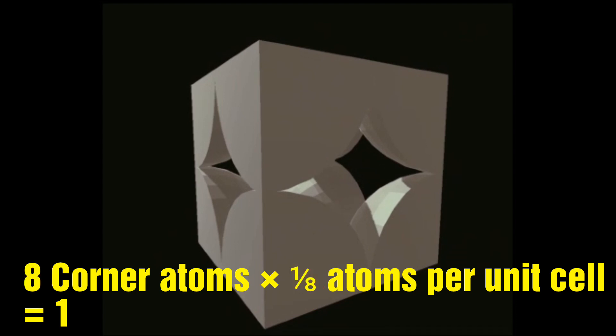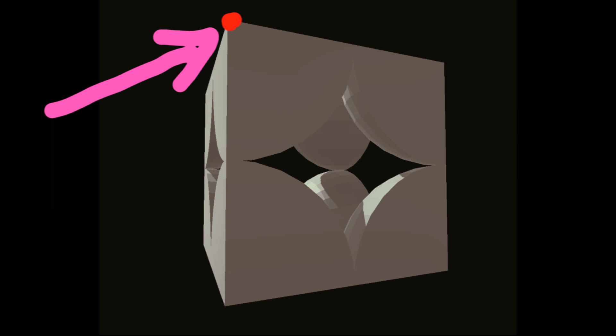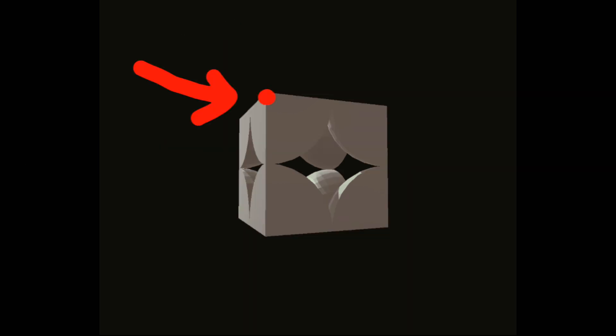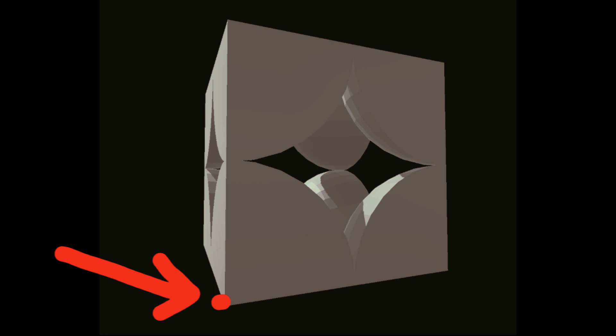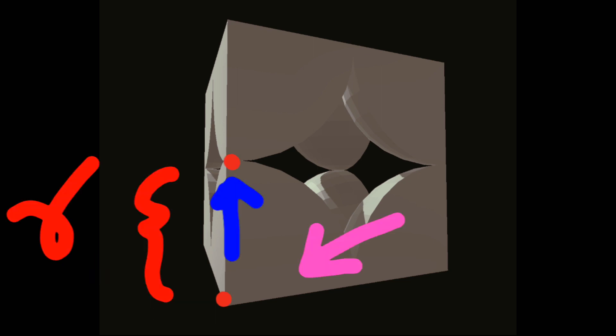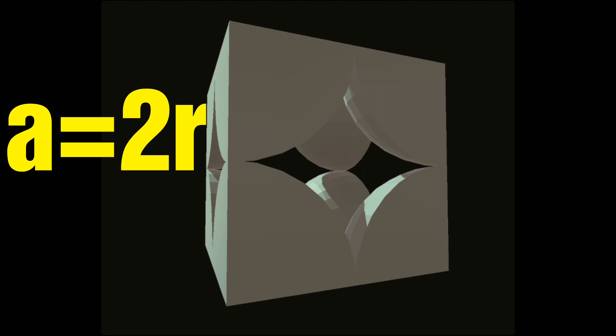From this point to this point, it is the lattice parameter A. From this point to this point, it is the radius of this atom. And similarly, from this point to this point, it is the radius of this atom. The next thing to observe is that these two atoms are touching each other. Therefore, A is equal to 2R. The lattice parameter A is equal to twice the radius of the atom.